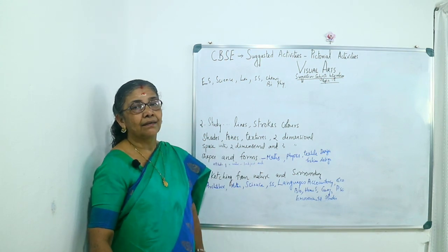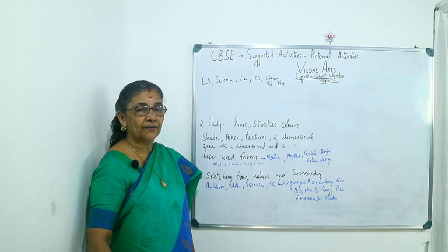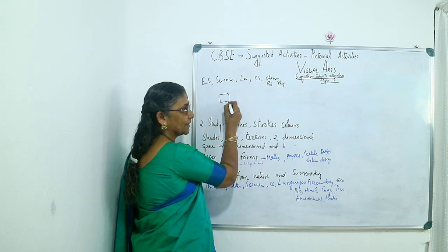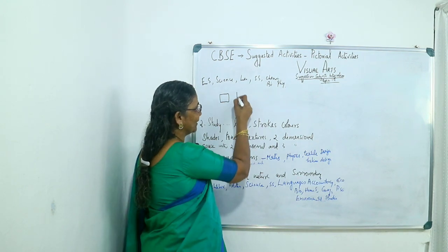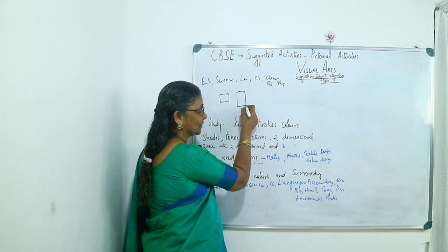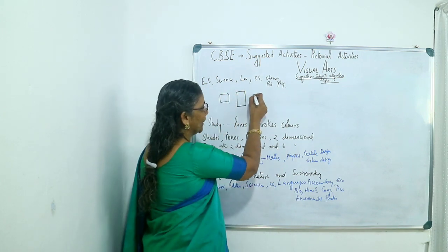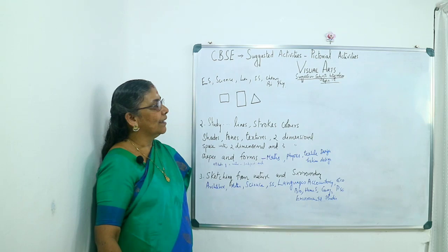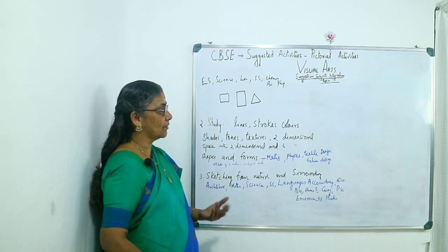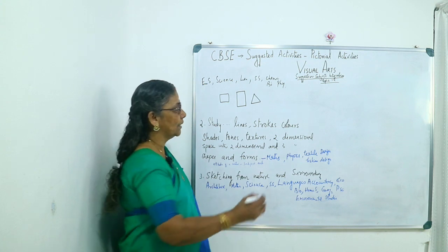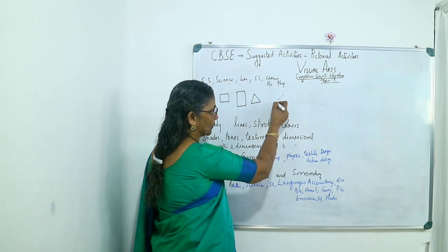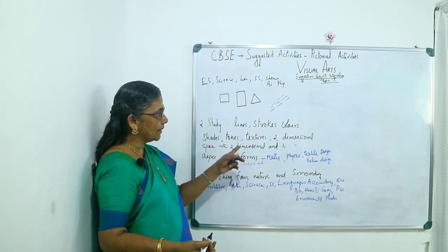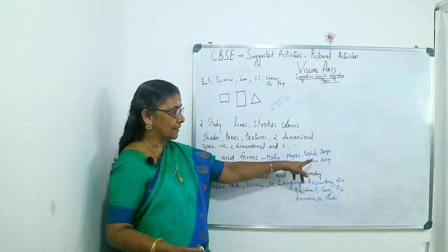Lines are important. With different lines we can see squares, rectangles, and we can form triangles. Strokes are also important — how the lines come in a slanting position. These are all important regarding math, physics, then textile design and fashion design.